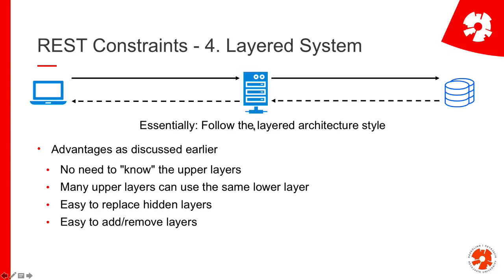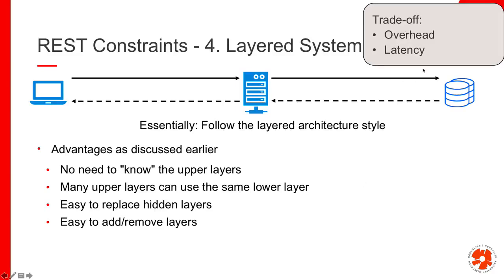Constraint number four is to follow the layered architecture style — exactly what was discussed before. Use a system that is layered, with no direct calls across layers and no backwards calls. The advantages are: the back end doesn't need to know the front end, the database doesn't need to know the server, many upper layers can use the lower layers, and it's easy to replace, add, or remove layers. The trade-off is additional overhead — a direct database call might be quicker, but each added layer means more HTTP requests and more processing time.